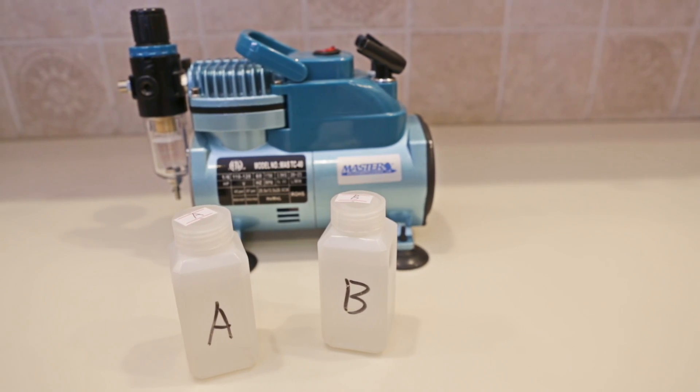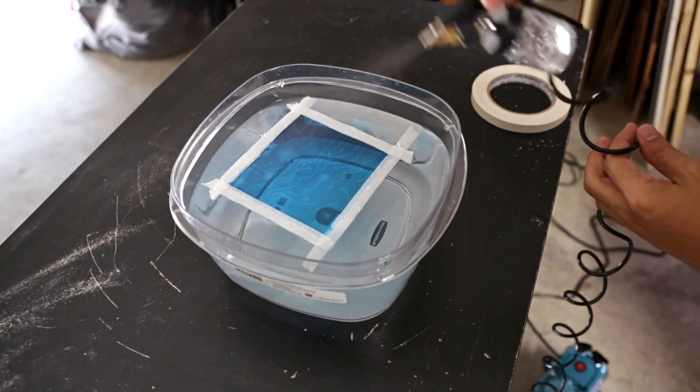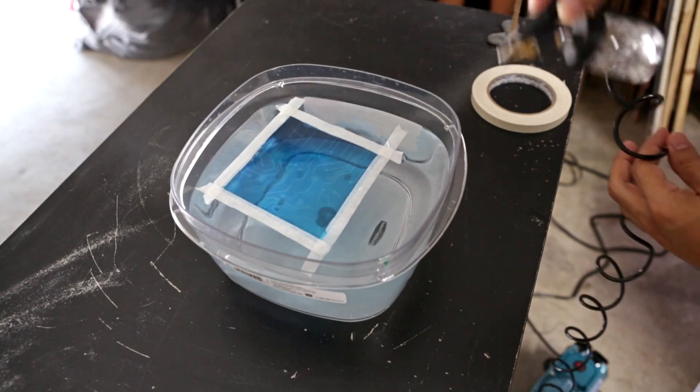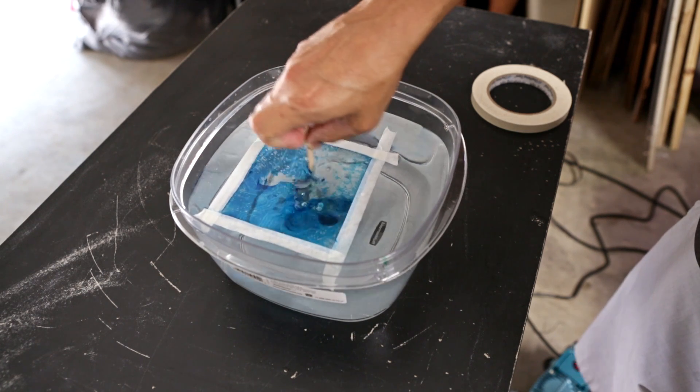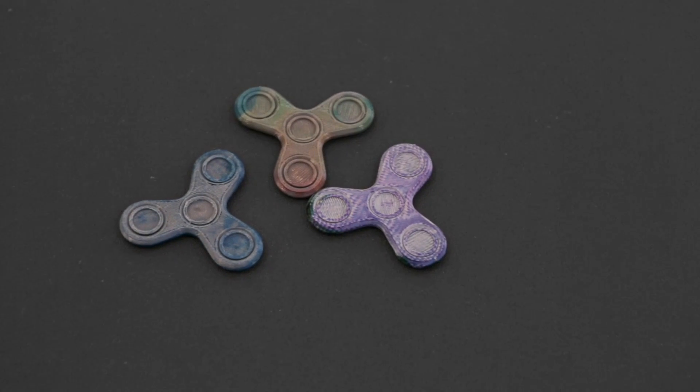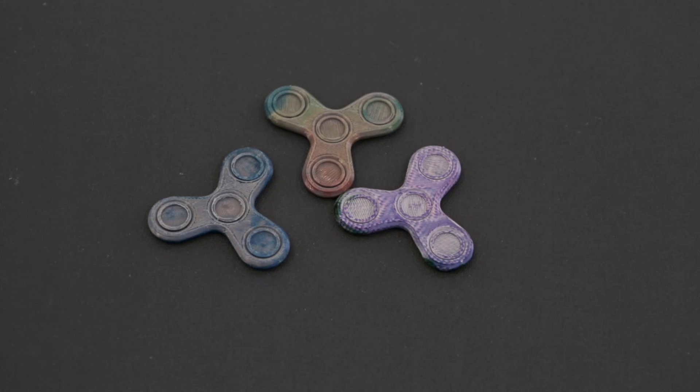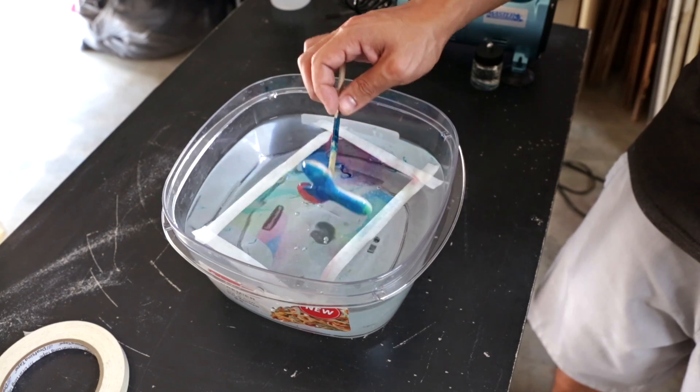Typical hydro dipping uses a two part activator solution. These are additional chemicals that are supposed to help when dipping. We did try using them, but when we did, our parts actually failed. We kept trying, but ultimately we were able to do this without using any of the activators.